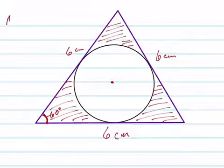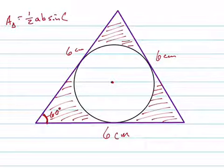Which means we could use the area of a triangle to be 1 half AB sine of C. That's the easiest formula to use in this instance.